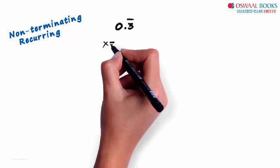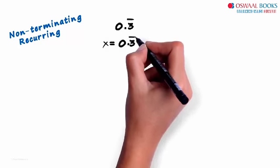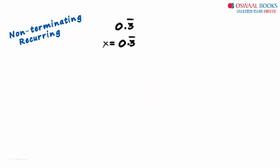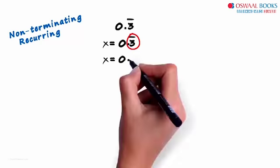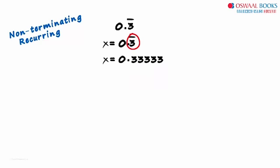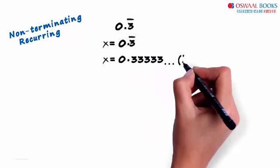Let us equate x with 0.3 bar. You will know soon as to why we are doing this. A bar over 3 means x equals 0.3333 and so on. Let this be our first equation.